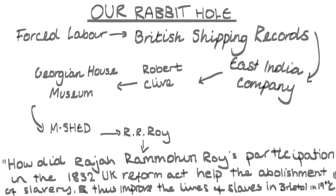There is still information we have not found on Roy due to the depth of his legacy, but we are happy with our answerable research question as we believe that Roy helped define Bristol as a place due to his involvement with the 1832 Reform Act. Ultimately, our rabbit hole journey came to an end with our answerable research question being: how did Raja Rammohan Roy's participation in the 1832 UK Reform Act help the abolishment of slavery and thus improve the lives of slaves in Bristol in the 19th century? Verbal information has been referenced within the notes section of the presentation.